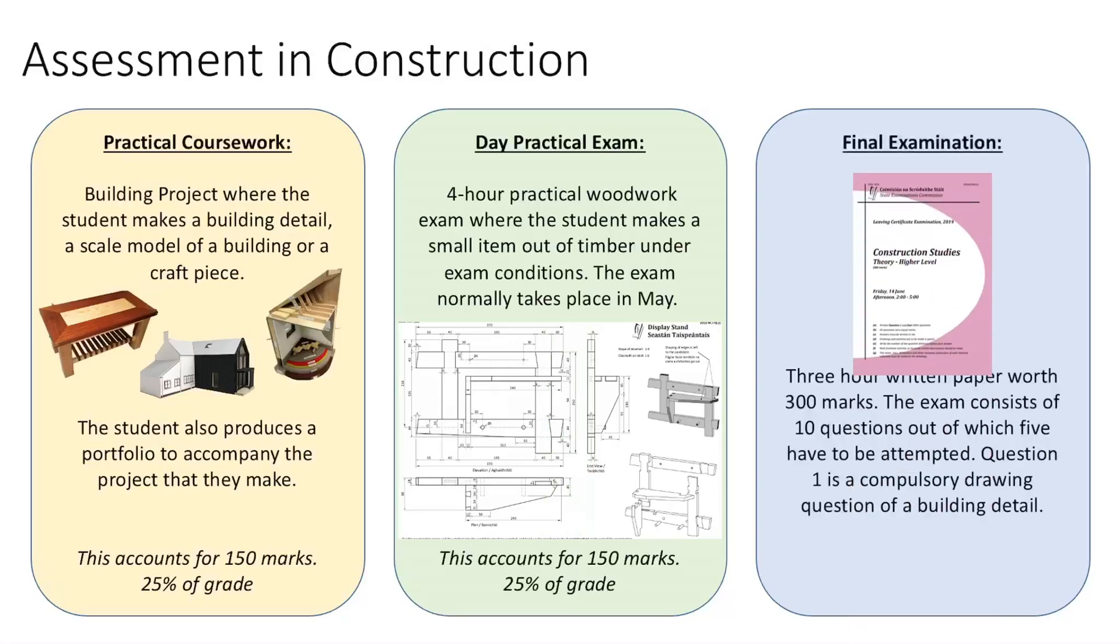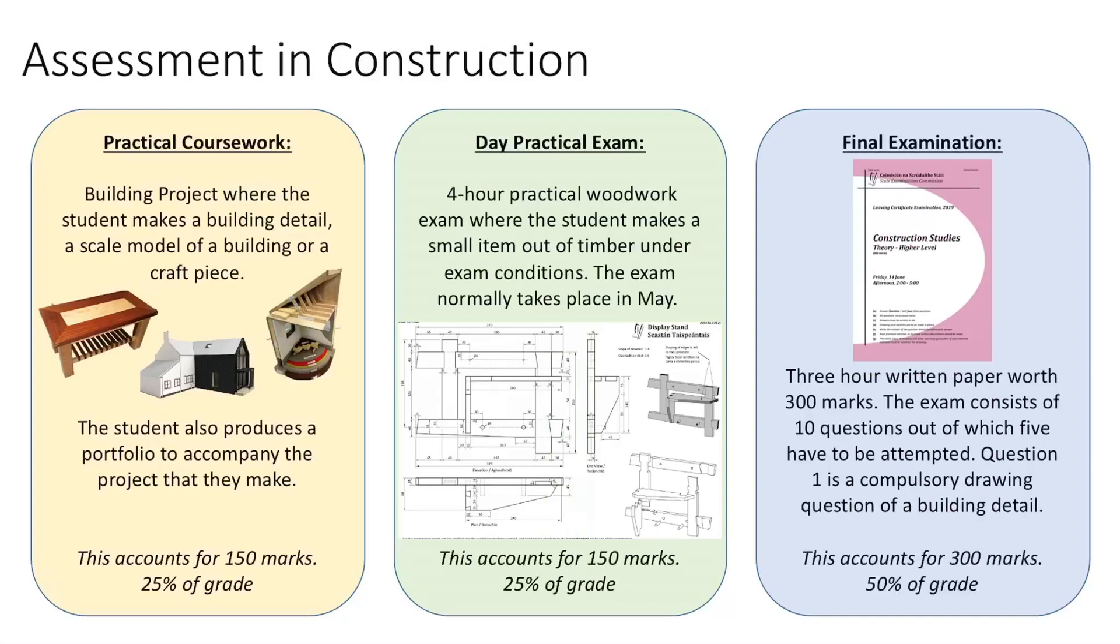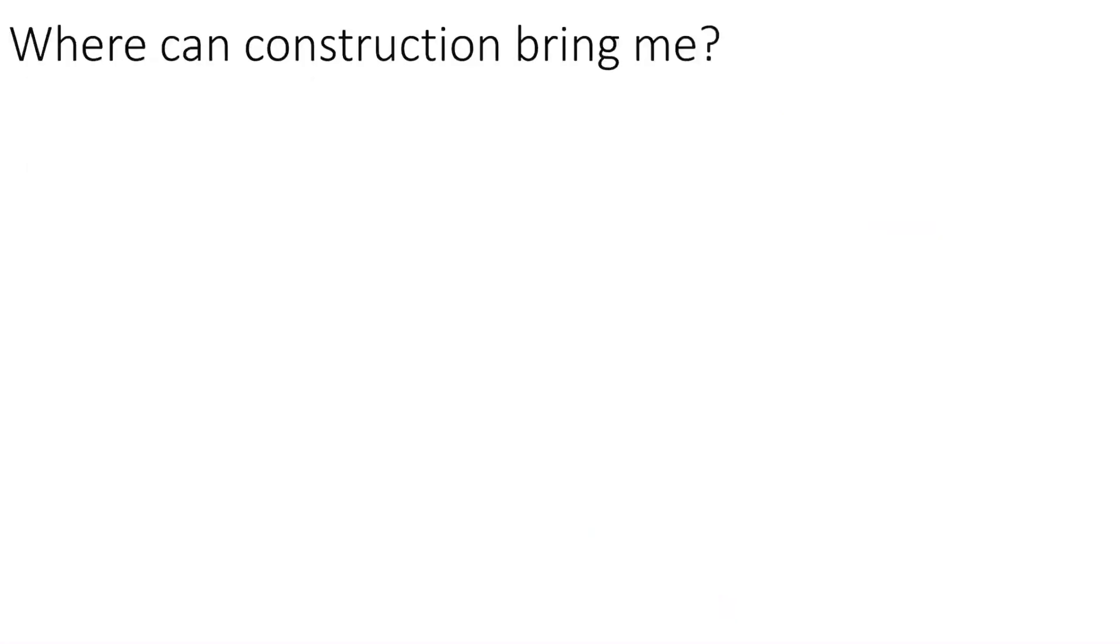The final exam is a three-hour written exam worth 300 marks. The exam consists of 10 questions, out of which five must be attempted. One of those five questions is a compulsory question one, so you must do question one and any four other questions. Question one is a compulsory drawn question of a building detail, similar to your Junior Cert Tech Graph. That's worth the final 300 marks, the final 50% of your grade.